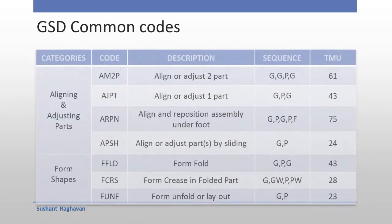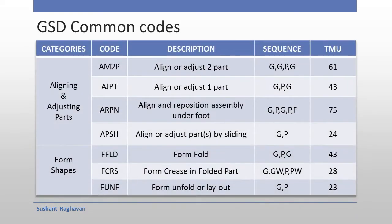GHD Common Codes — Aligning and Adjusting Parts category: AM2P — Align or adjust two parts; AJPT — Align or adjust one part; ARPN — Align and reposition assembly under foot; APSH — Align or adjust parts by sliding.